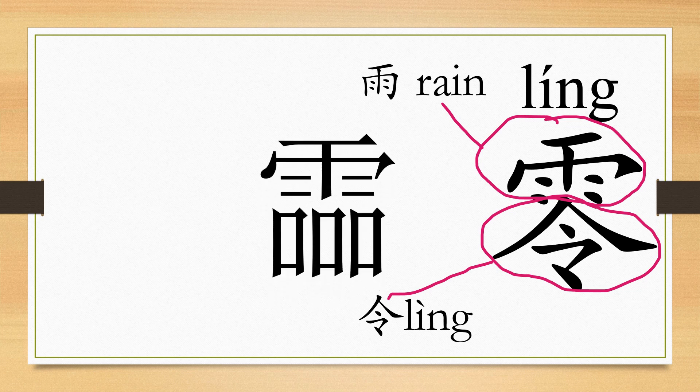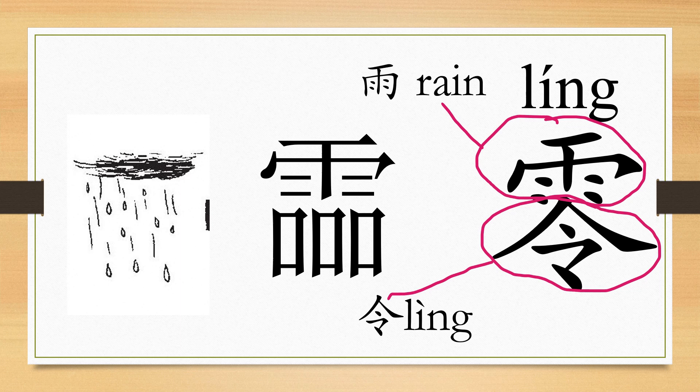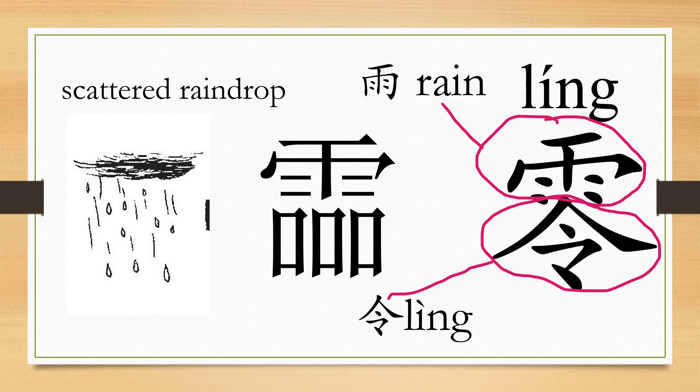The ancient Chinese character of Ling evolves from the image of a raindrop, so the original meaning of Ling is scattered raindrop. And Ling, nowadays, means fragmentary or zero.